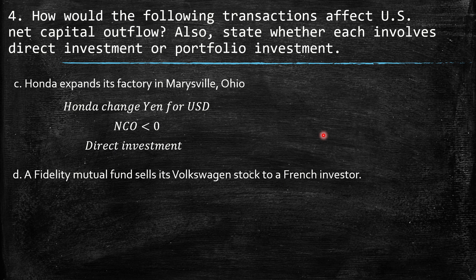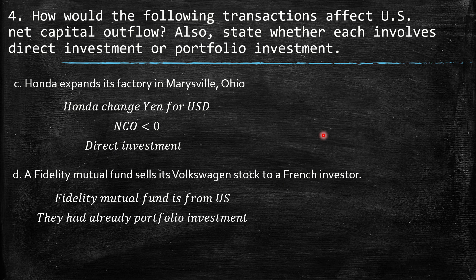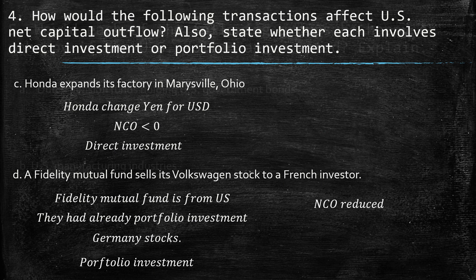D: A Fidelity Mutual Fund sells its Volkswagen stock to a French investor. Assuming Fidelity is from the US — they had portfolio investment in Germany with German stocks, and then they move that to a French investor. They are closing that position, so net capital outflow has a reduction. Initially there was a net capital outflow higher than zero, but after selling to the French investor they close that position, so net capital outflow equals zero for this transaction.